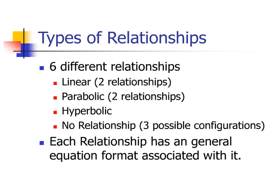As I said earlier, there are six different types of graphical relationships. The first set is linear and those are direct and indirect. The second one is parabolic. There's the parabolic relationship that is wrapped around the y-axis and then you have the root graphical relationship, which is wrapped around the x-axis. You have hyperbolic. And then you have three configurations of no relationship. Now, for all of the graphical relationships, in general, with the exception of no relationship, there is a general equation format associated with each.